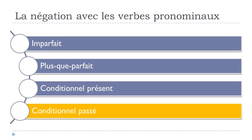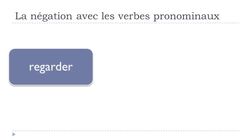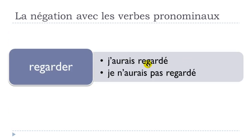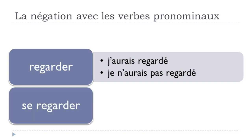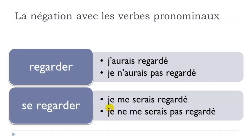For le conditionnel passé — a compound tense — REGARDER gives J'AURAIS REGARDÉ, negative JE N'AURAIS PAS REGARDÉ. For SE REGARDER: JE ME SERAIS REGARDÉ, and the negative is JE NE ME SERAIS PAS REGARDÉ — exactly the same pattern as the passé composé and plus-que-parfait.